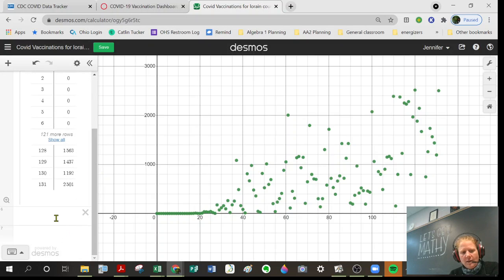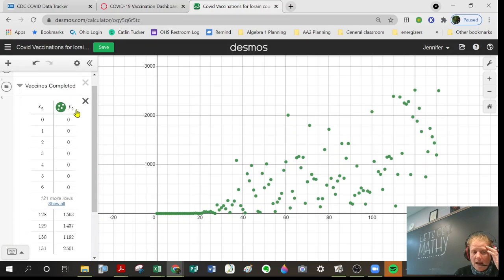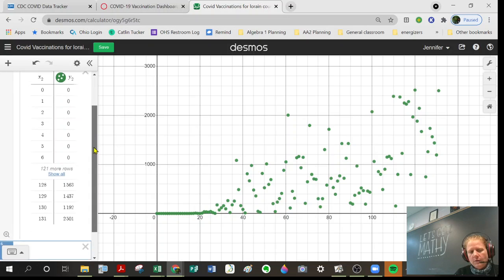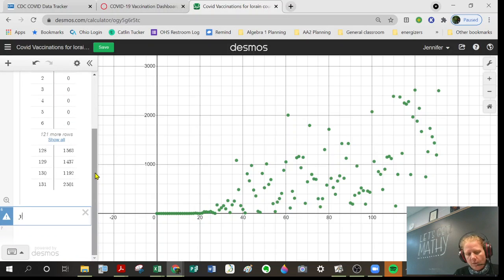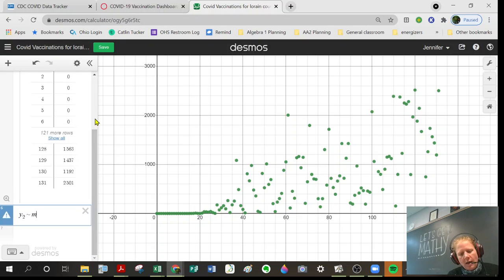Let's go ahead and see what happens with the correlation here. Notice it's no longer y1, it's y2. So if I was to work with another scatterplot, it'd be y3, y4, etc. So y2 is approximately mx2 plus b.